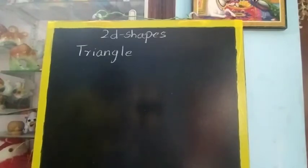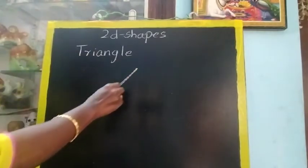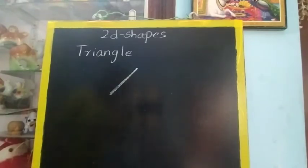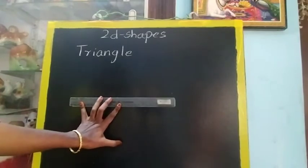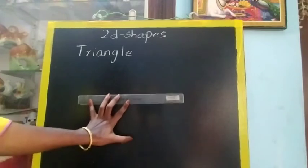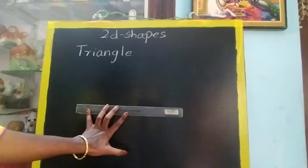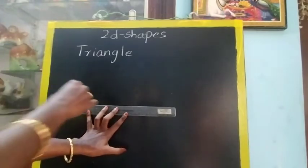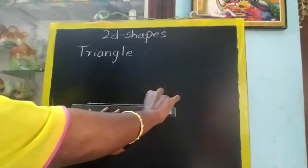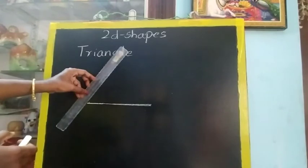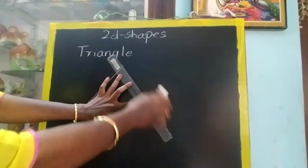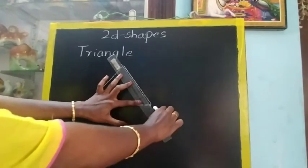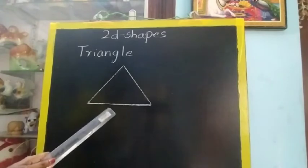Today we are going to learn triangle and square. Triangle means it will have 3 sides. What is meant by 3 sides? These straight lines are called sides. So a triangle will have 3 sides and it will be closed. How to draw? You must use a scale to draw and hold it very tight. Hold straight, and when you are drawing a line you must not remove your scale. First time it will not come perfectly, so you have to practice many times.